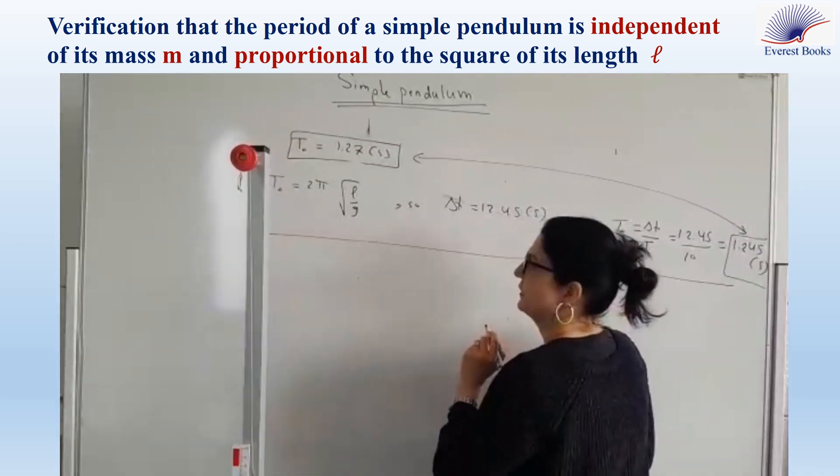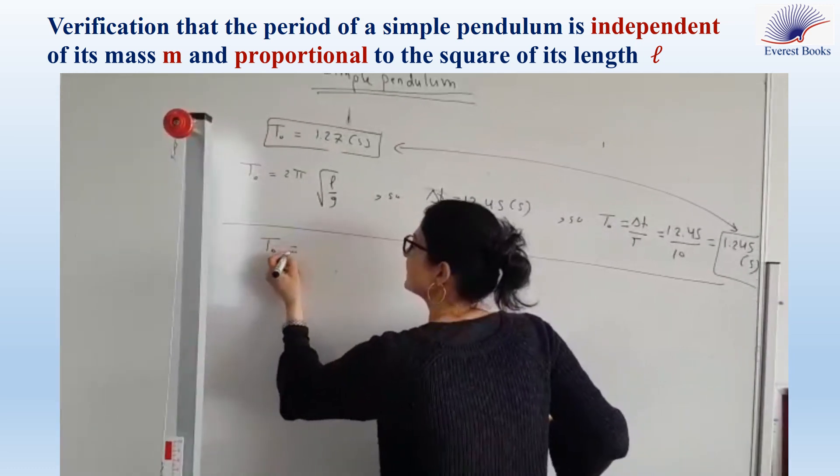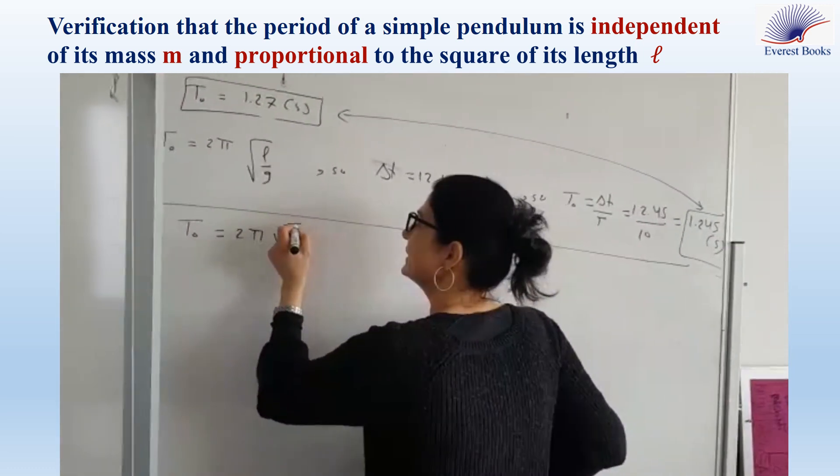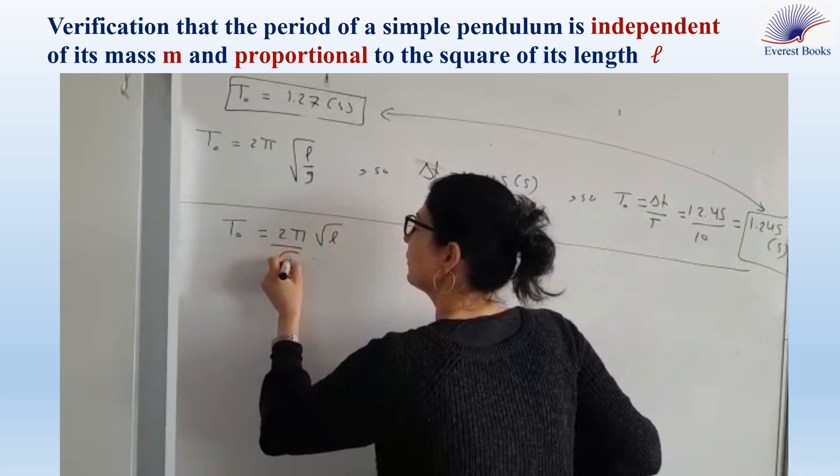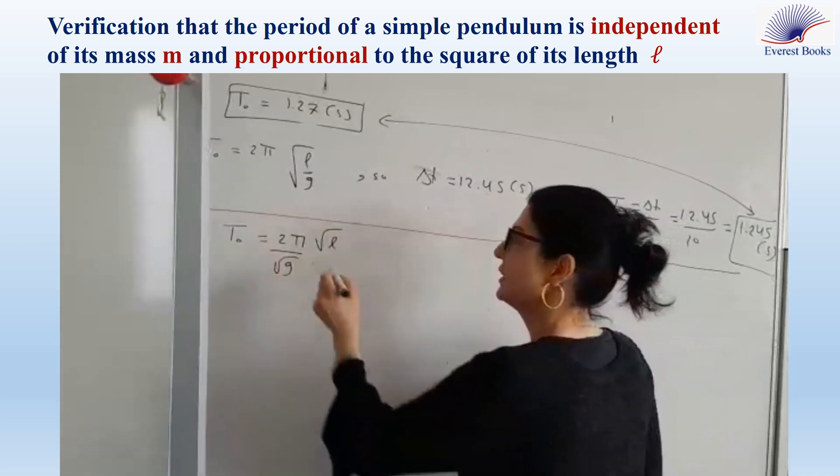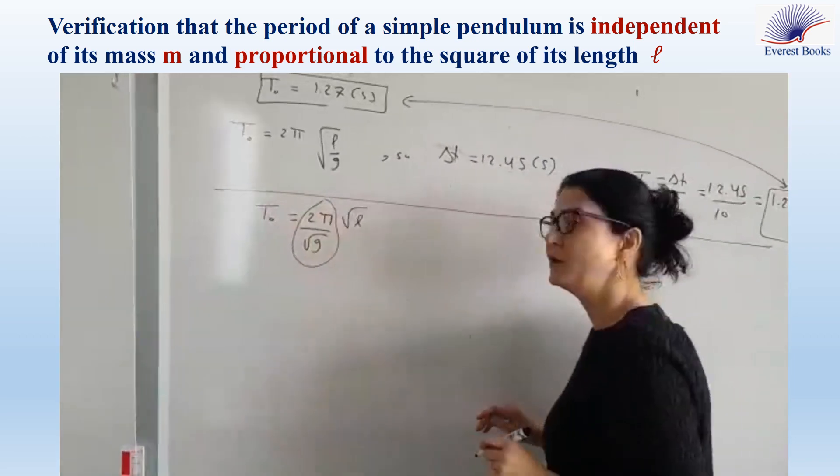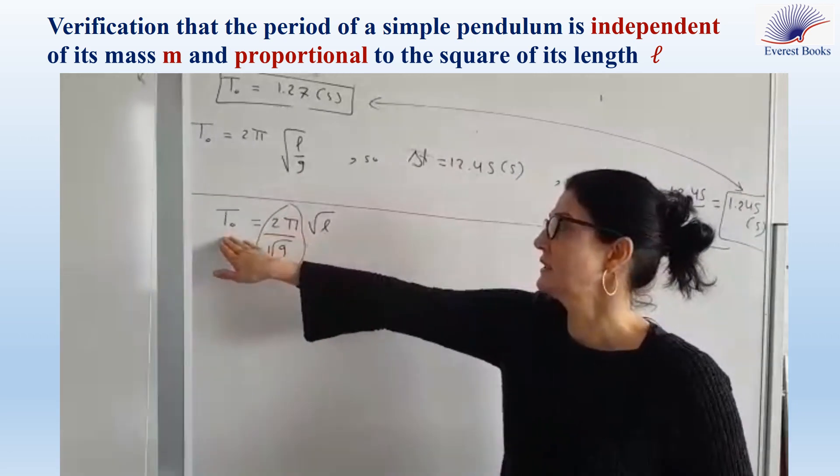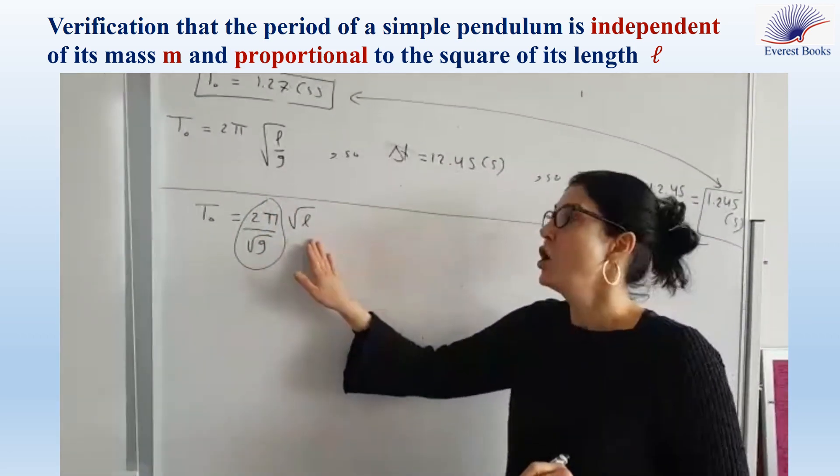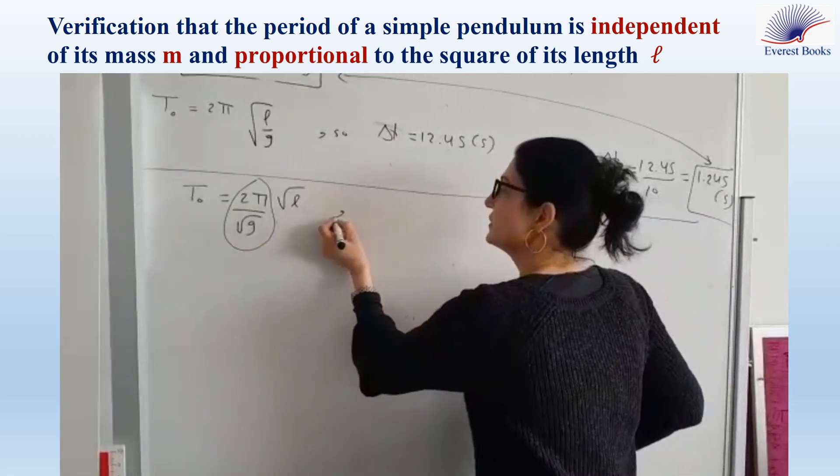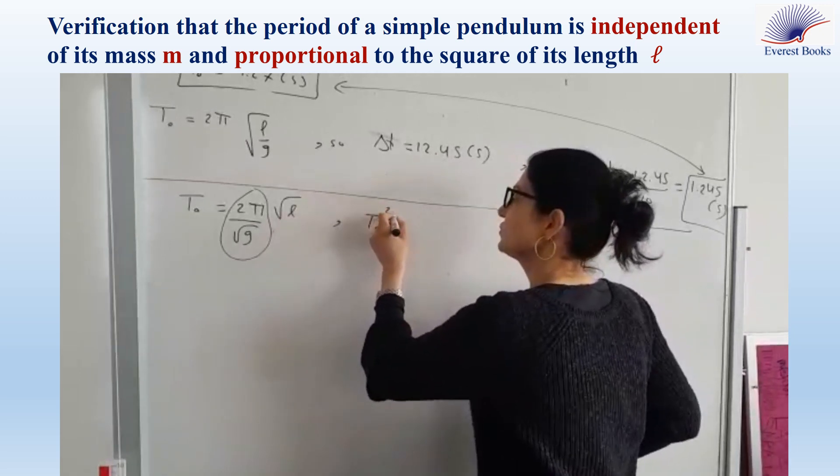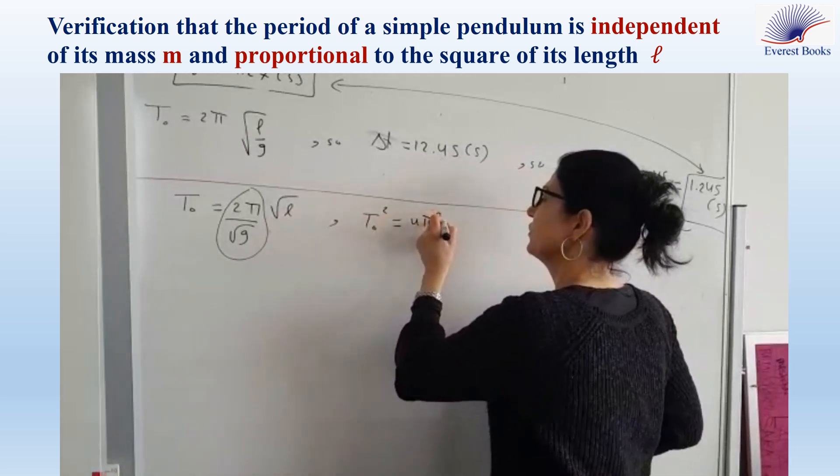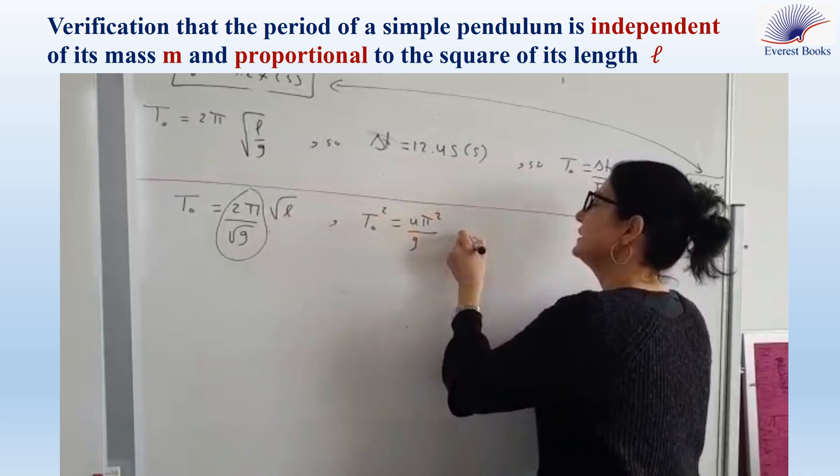Now, consider the formula. T0 is equal to 2π times the square root of L over the square root of g. 2π over the square root of g is constant, which means that T0 is directly proportional to the square root of L. Square both sides.